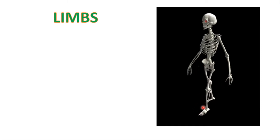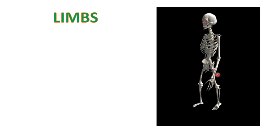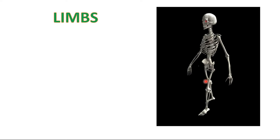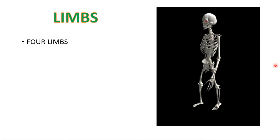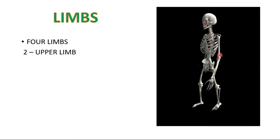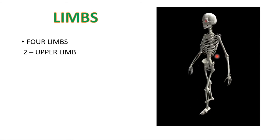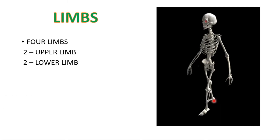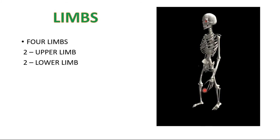Next, we are going to study the fourth type of bones, which is limbs. The picture is showing limbs. We have limbs in the upper body as well as in the lower body. There are totally four limbs in our body — upper two limbs and lower two limbs. They help us with our movements.